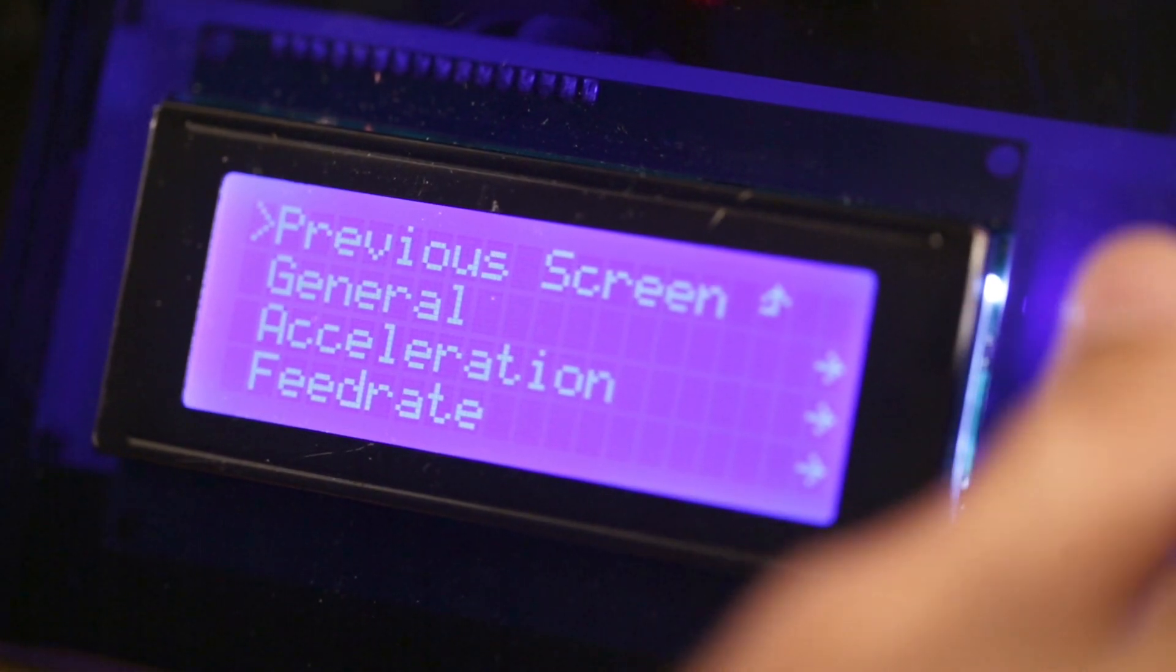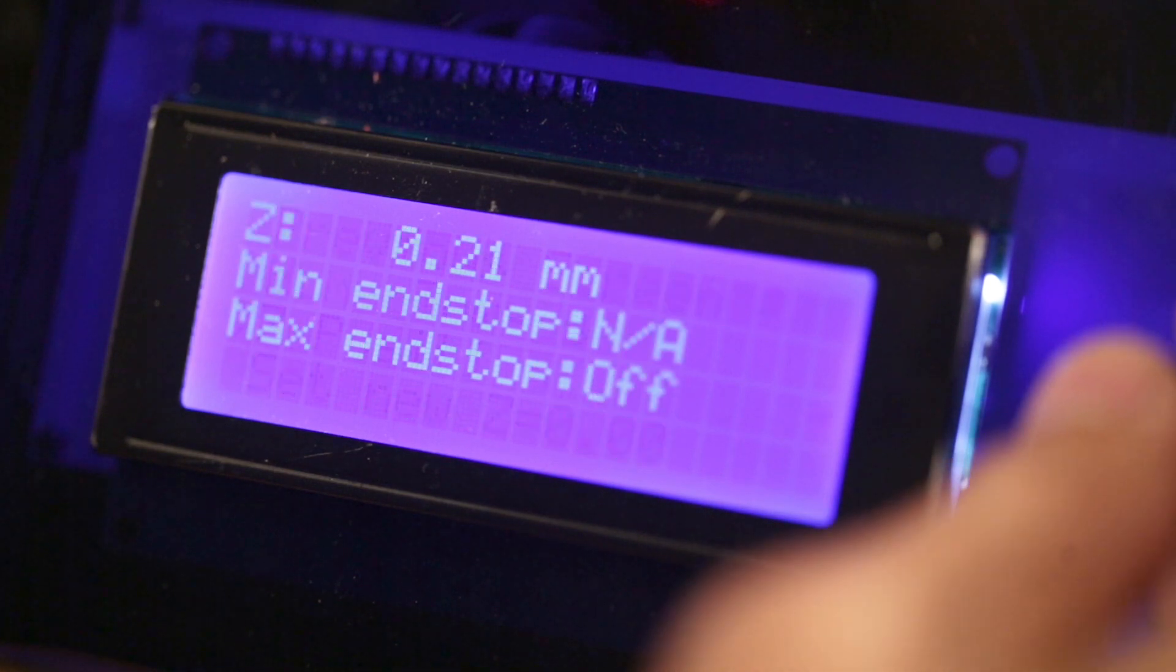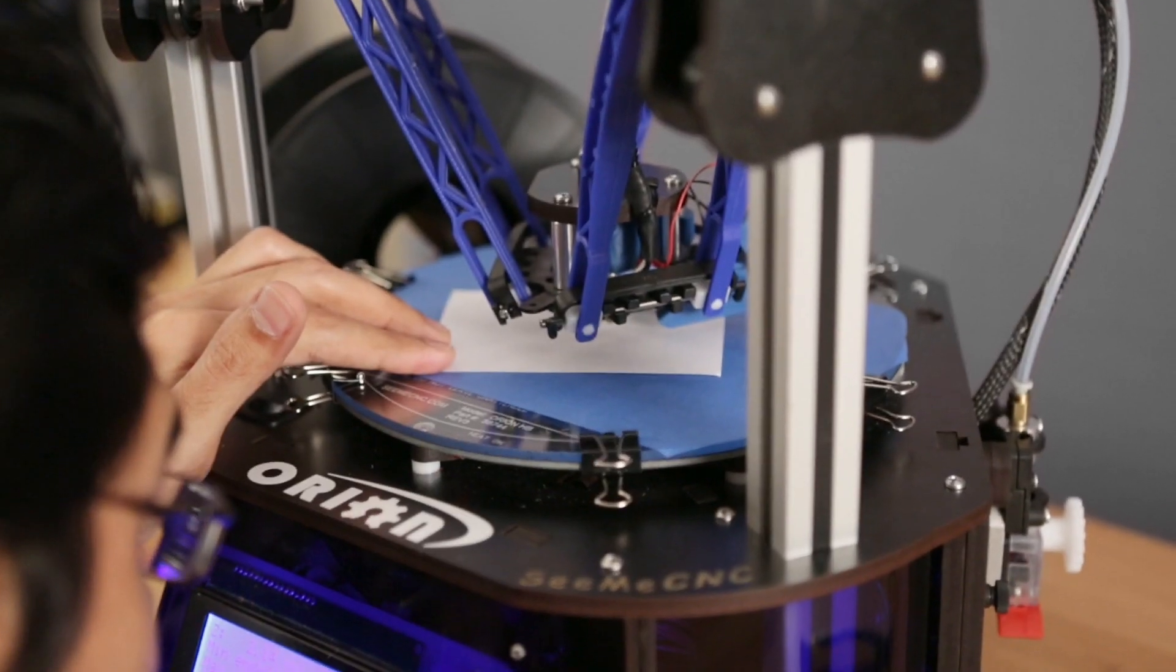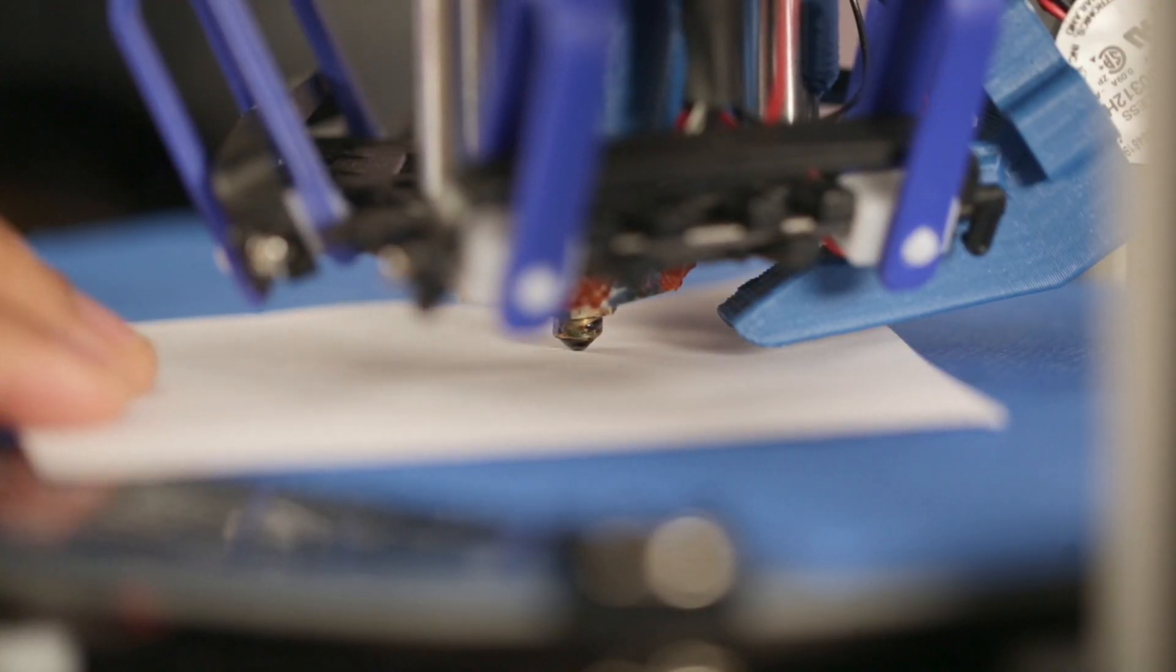To level the bed we're gonna use the LCD to calibrate the Z height. The little thing in the front here is a rotary encoder which is really nice for navigating menus and fine-tuning the Z position. We're gonna use a piece of paper to level the Z height and we're gonna turn the encoder ever so slightly to make fine adjustments until that piece of paper is just snagging the nozzle.